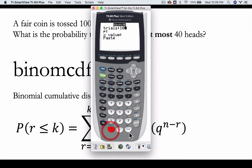We're tossing a coin a hundred times. The value of getting a heads is 0.5. The number of heads we're looking at is 40, and we hit enter, enter, and we're going to get an answer. You get about a 2.8% chance of getting at most 40 heads.